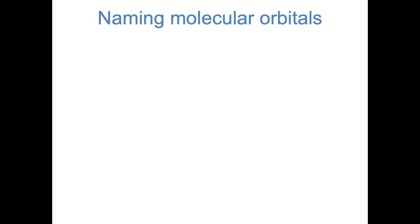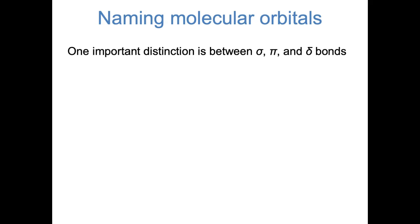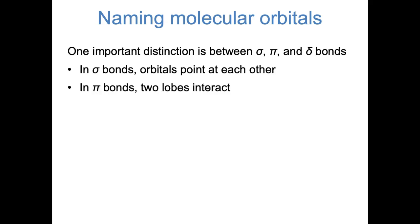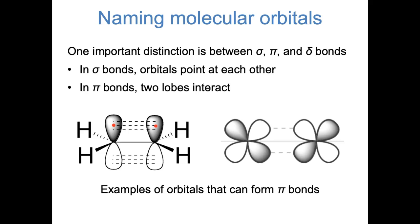Before we look at molecular orbital diagrams, I'd like to go on a quick tangent about how we name molecular orbitals. One important distinction is whether they have sigma, pi, or delta symmetry. A sigma orbital is one where two atomic orbitals point at each other. These pictures show examples of atomic orbitals that can form sigma bonds, and whether those orbitals are s, p, or d, the lobes point at each other. In a sigma orbital, if you look at the line connecting the two atoms, there's no node passing through that line. Pi molecular orbitals are where two lobes of each atomic orbital interact in a side-on interaction, and whether those atomic orbitals are p or d orbitals, you have two lobes interacting.